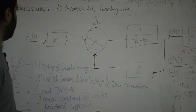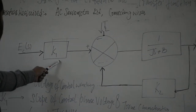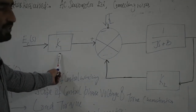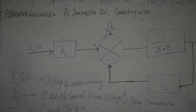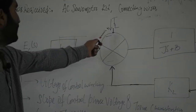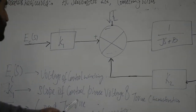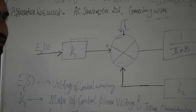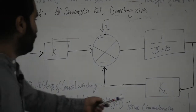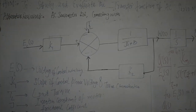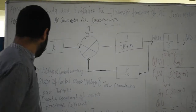This is our block diagram. The input EC(s) is the voltage of the control winding. Then we have block K1, which is the slope of control phase voltage and torque characteristics. At the summing junction we have two inputs: one is EC(s) and another is TL, the load torque. We give each input separately — first EC(s) with TL equal to zero, then TL with EC(s) equal to zero. The block 1/(Js+B) represents the motor transfer function. We also have feedback K2, which represents the slope of speed and torque characteristics. The output omega(s) is the angular speed, and integrating omega(s) gives theta(s), the angular displacement.